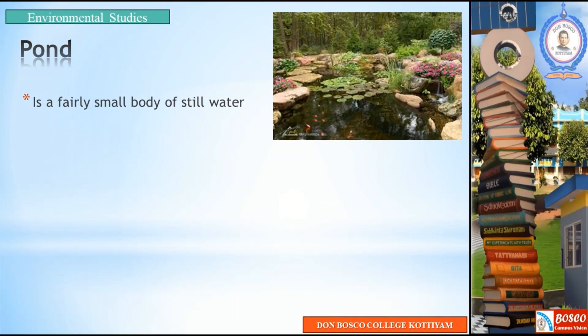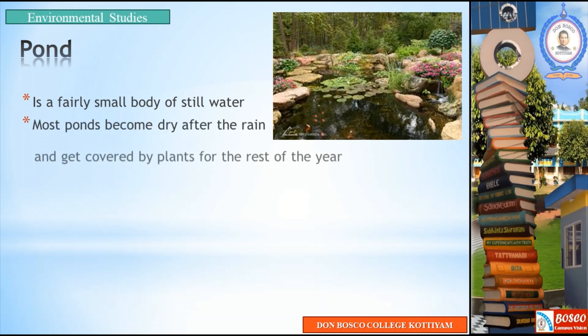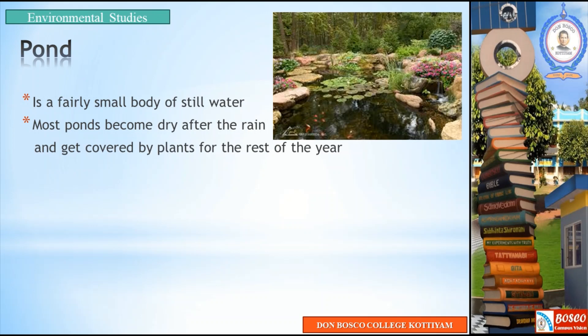When we look into the different types of ecosystem, one which comes under stagnant ecosystem is ponds. A pond is a fairly small body of still water. Ponds are very small in area. Most ponds become dry after the rain and get covered by plants for the rest of the year.